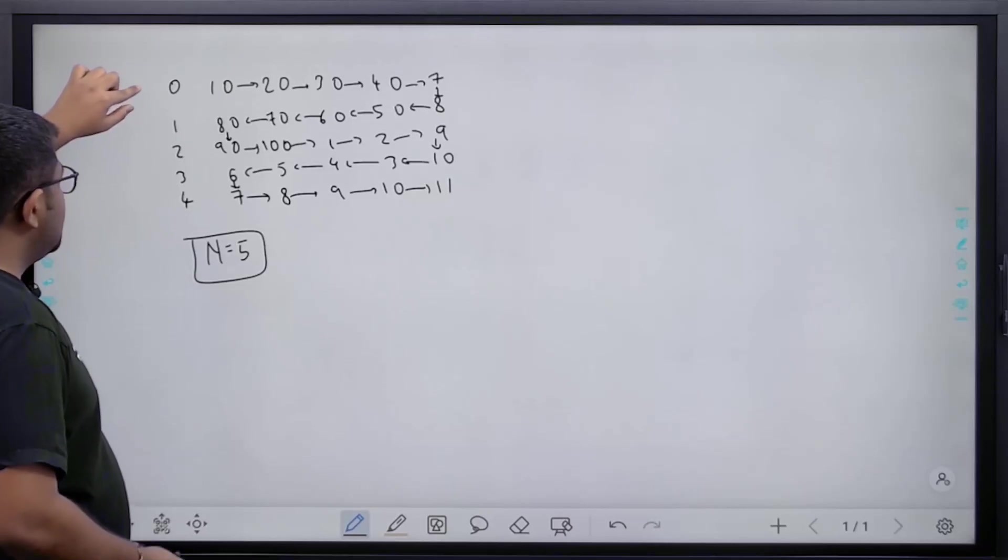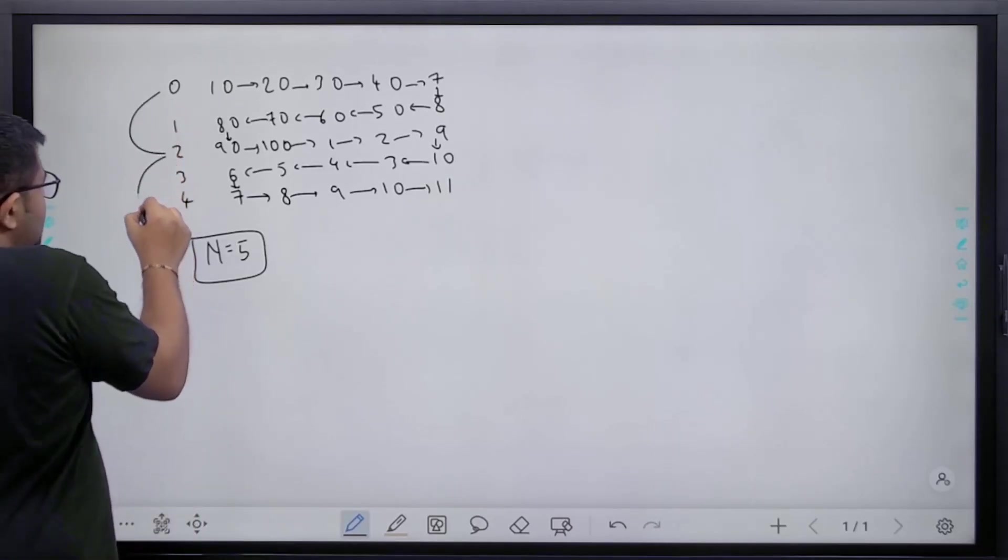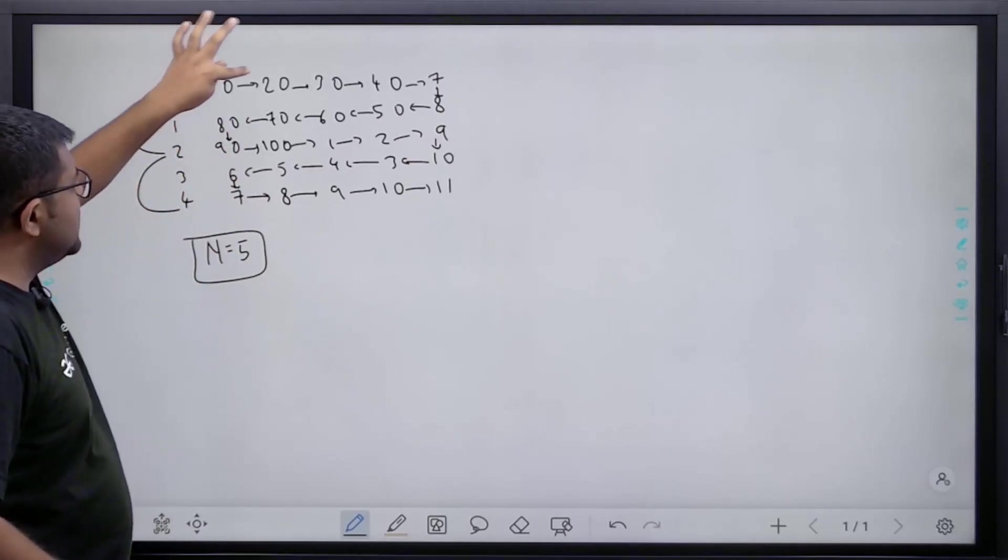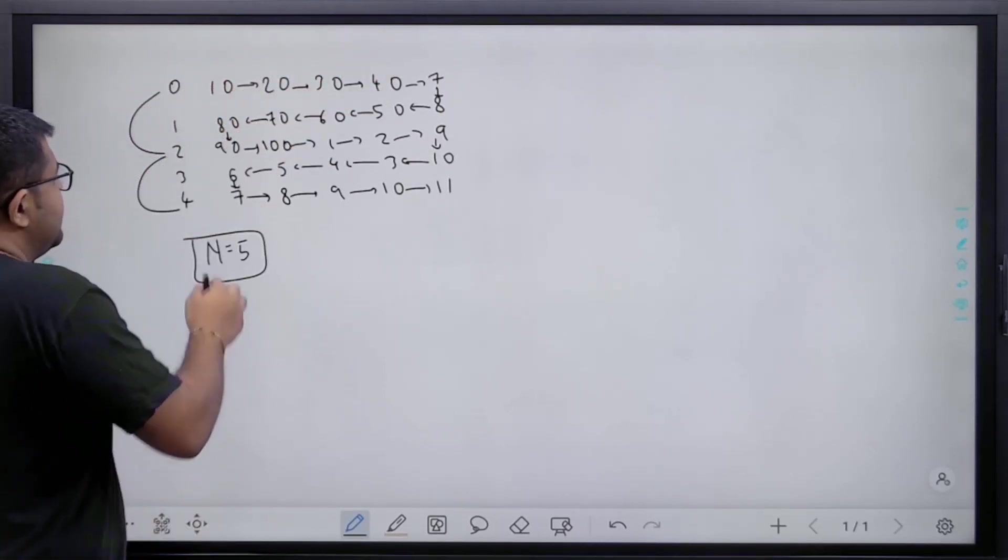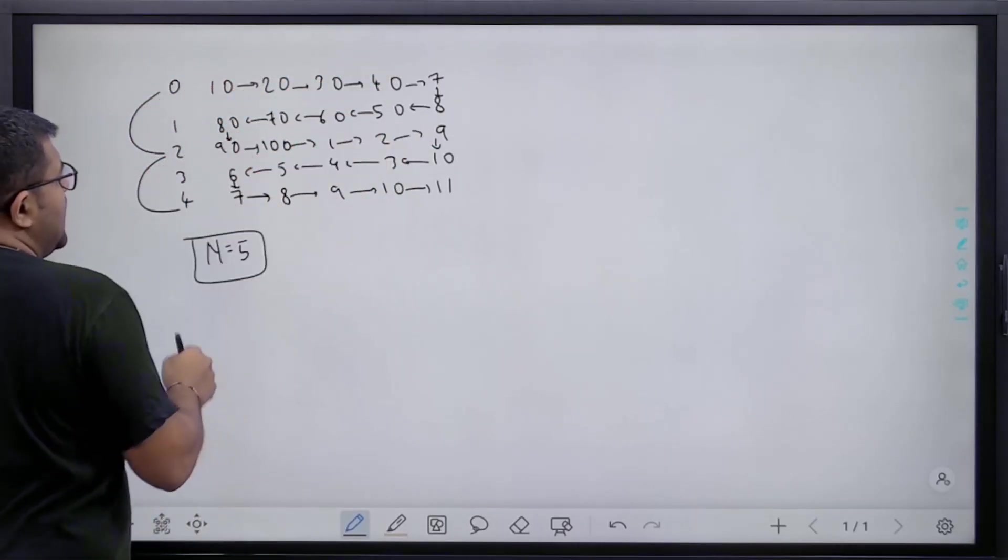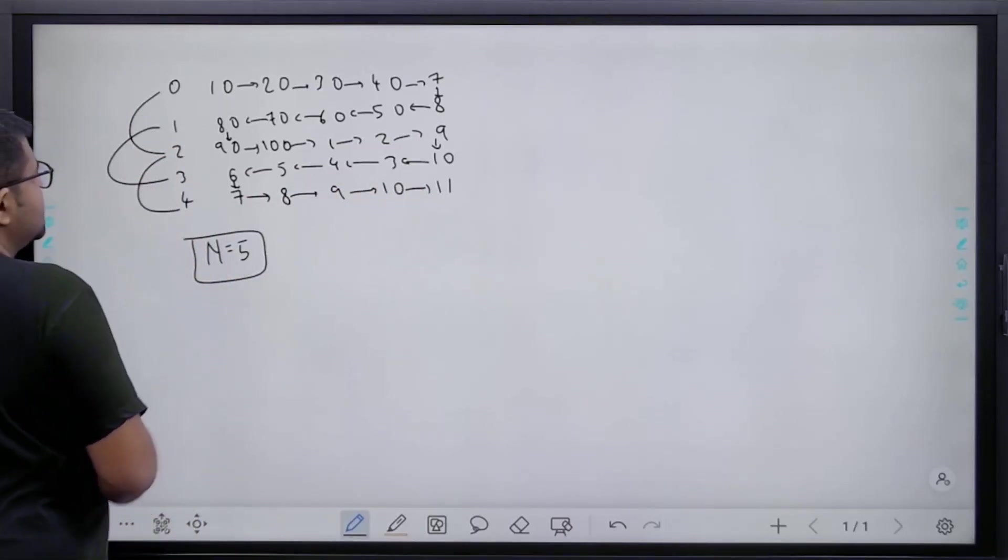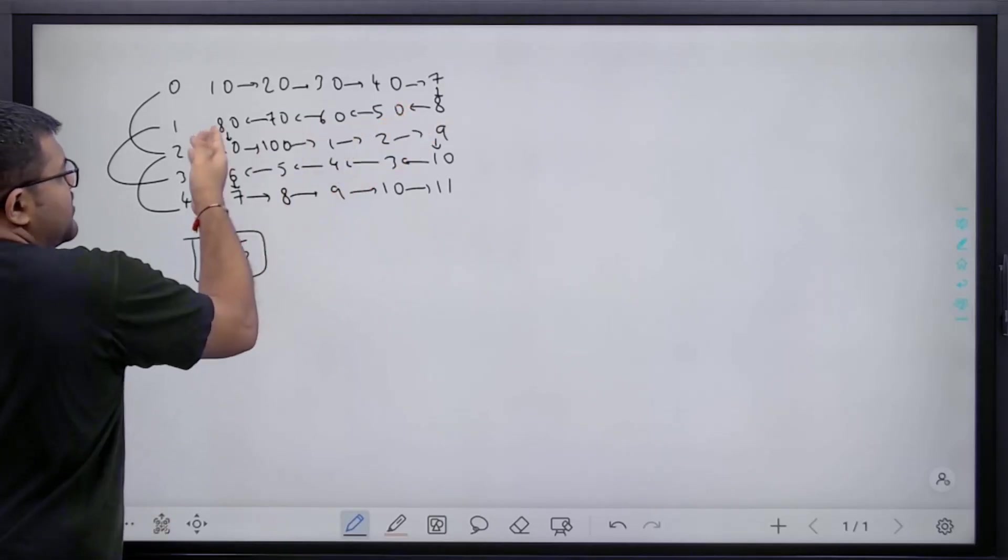What can we see here? For the rows which have even indexes, we are traversing on the right hand side starting from left: 10, 20, 30, 40, 7, 90, 100, 1, 2, 9, 7, 8, 9, 10, 11.